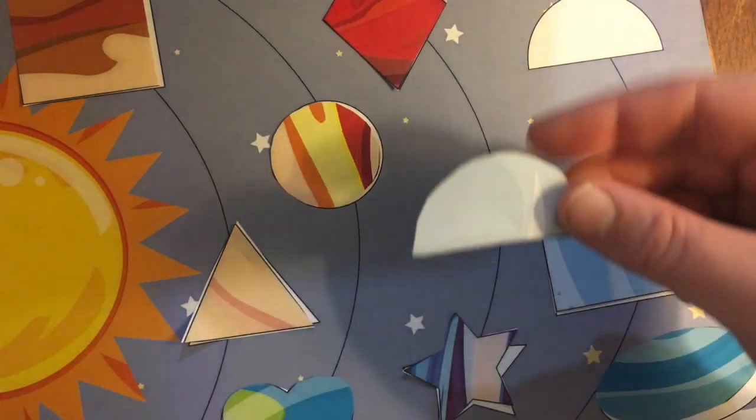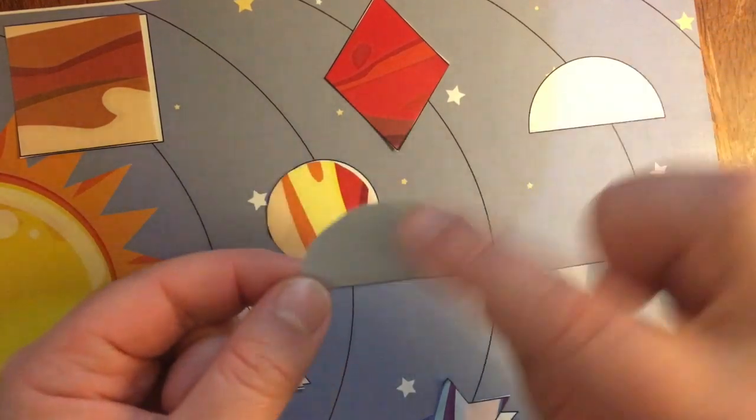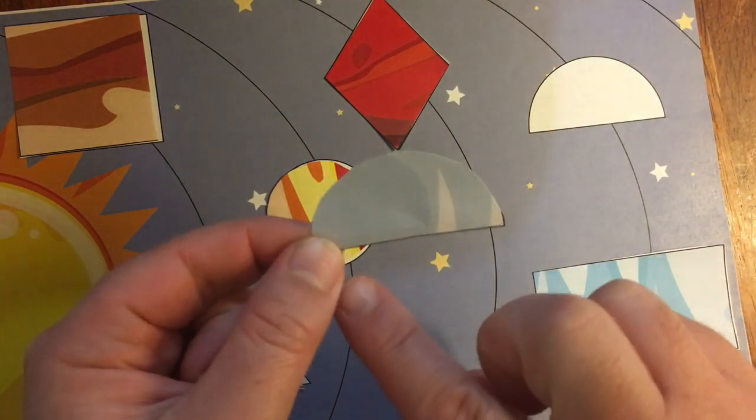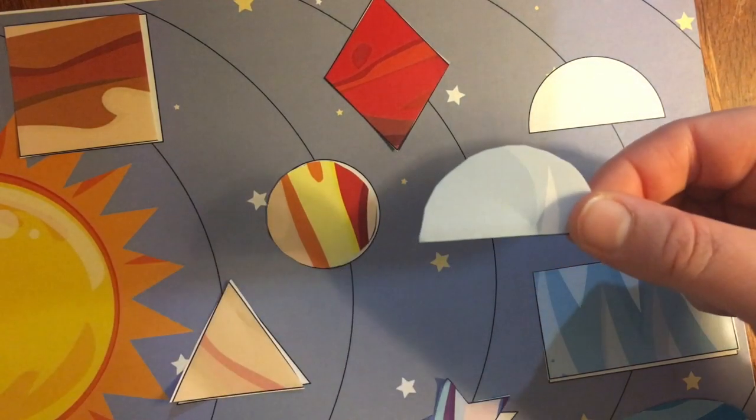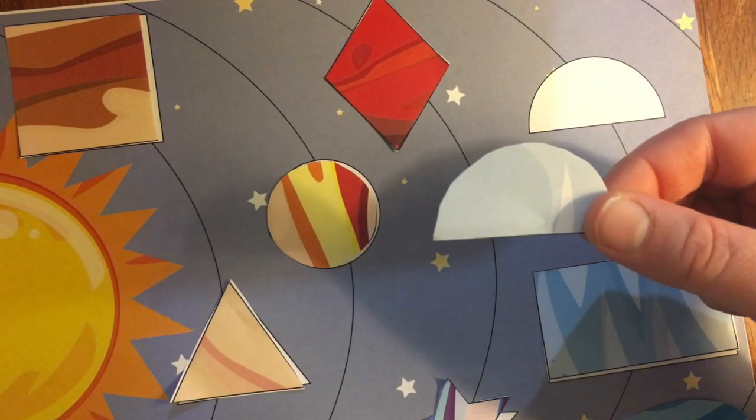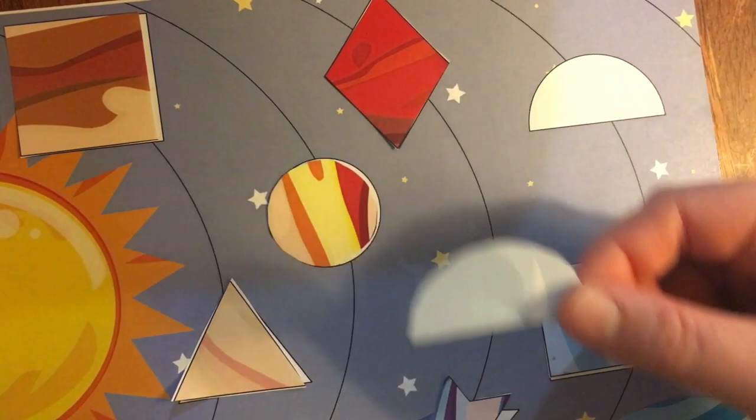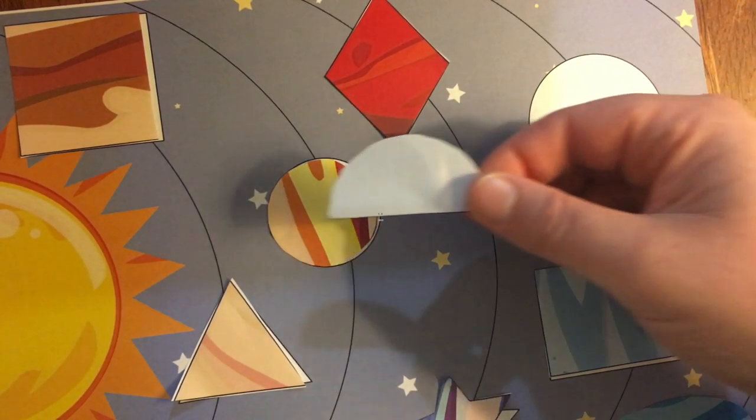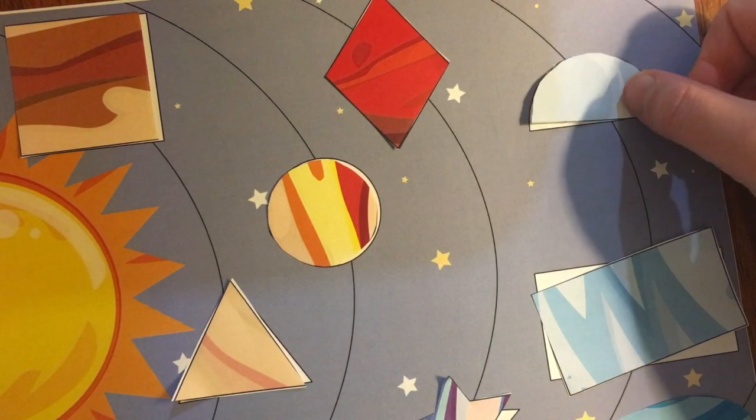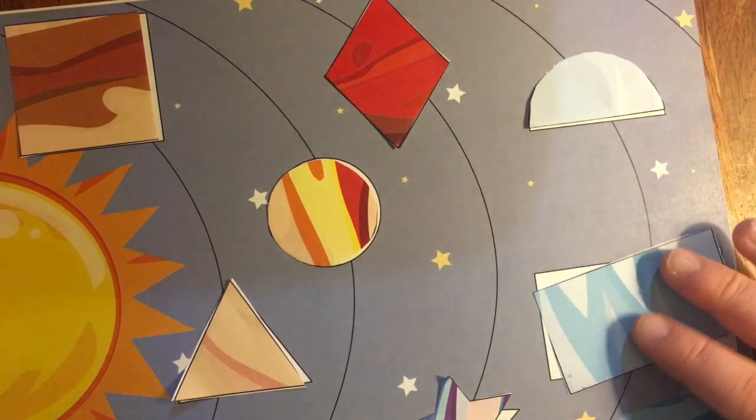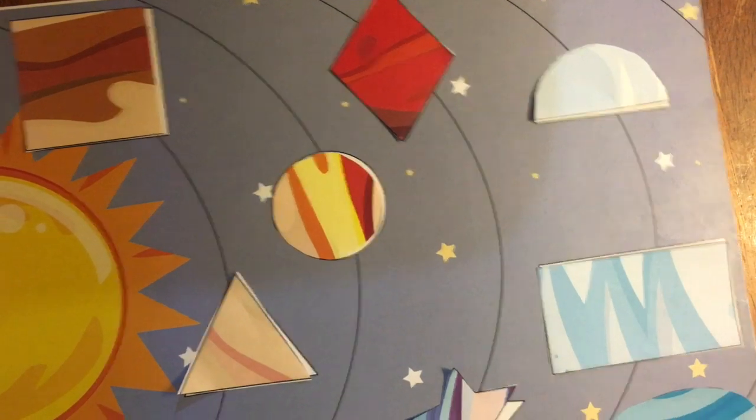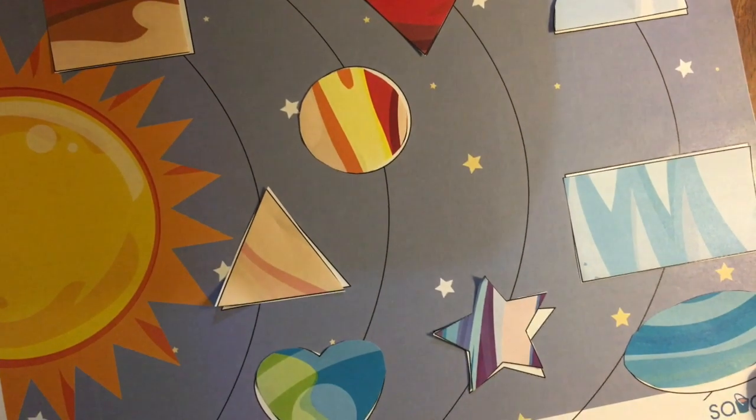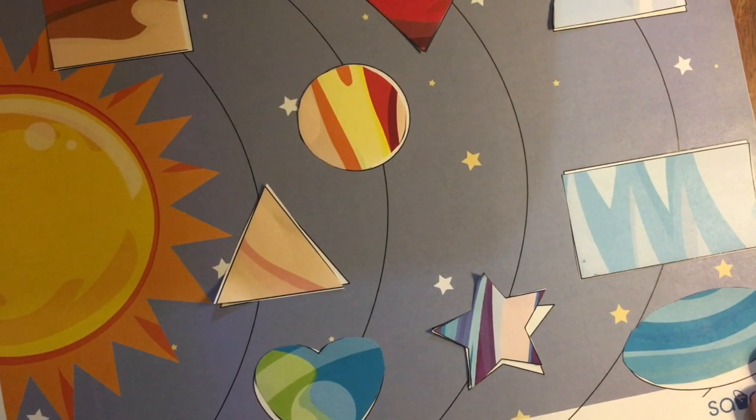There's one left. It looks round on this side and flat on the bottom. Is it a circle? No, because the circle goes all the way around and around and around. And this doesn't. But look, it's like a half circle. It's called a semicircle. We found all the matches in our space shape match game.